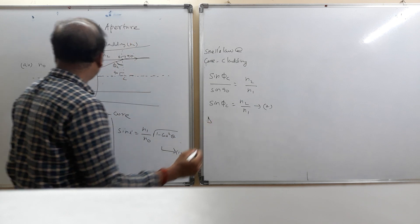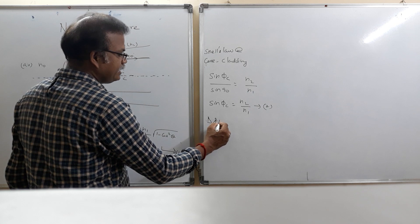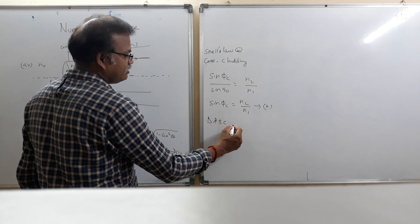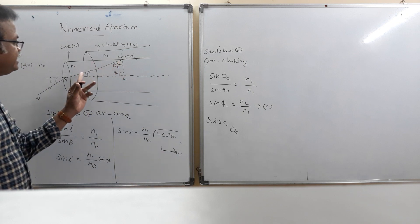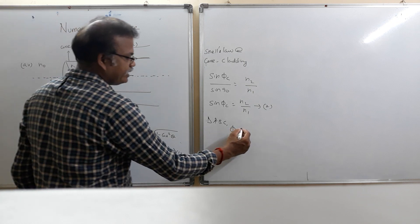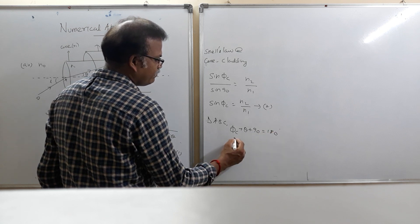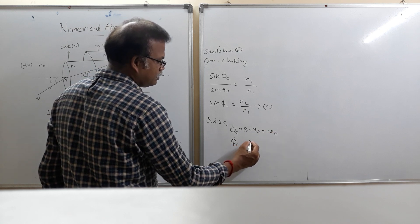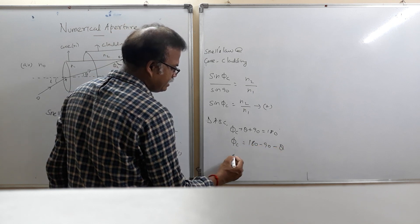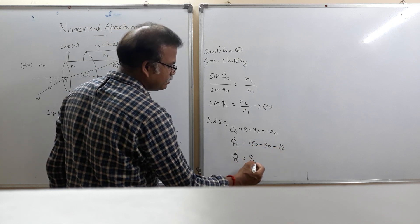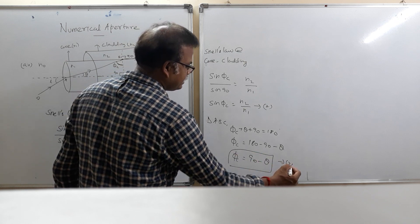As we know, in right triangle ABC, the sum of all the angles, phi c plus theta plus 90 is equal to 180 degree. So phi c is equal to 180 minus 90 minus theta, phi c is equal to 90 minus theta. This is equation number 3.